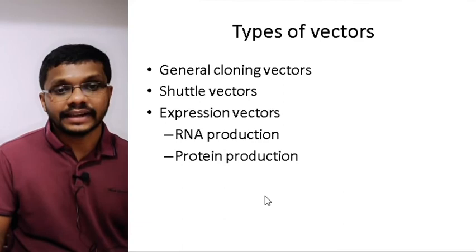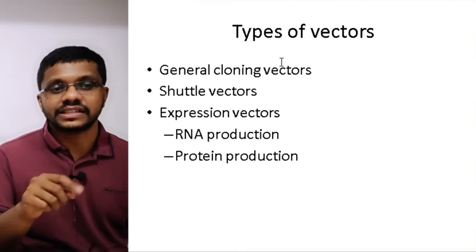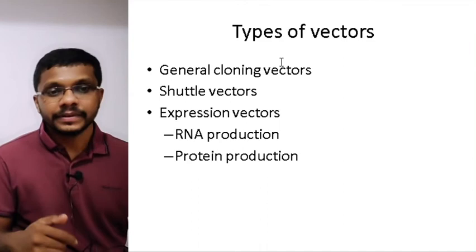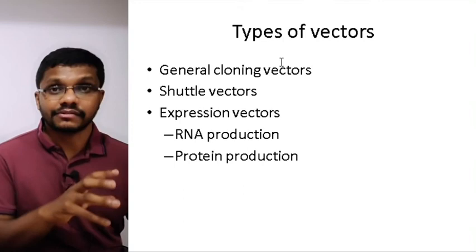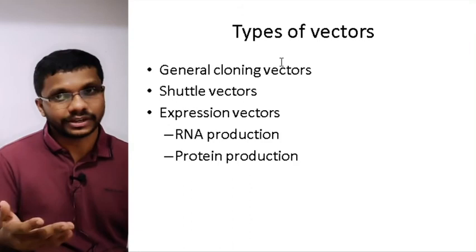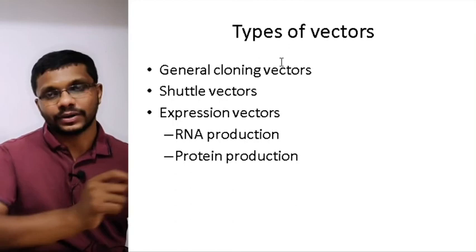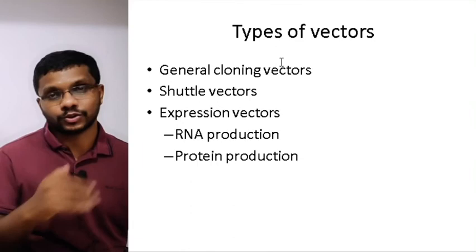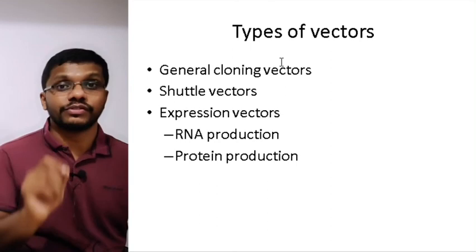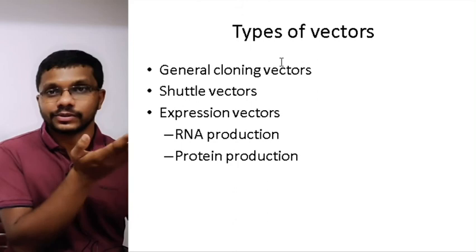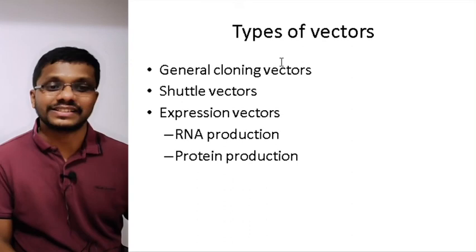There are different types of vectors. Some vectors are called general cloning vectors — all of the vectors discussed so far are general cloning vectors, used for cloning DNA and making multiple copies. Another type is called shuttle vectors. Shuttle vectors are vectors which can survive in two different hosts, meaning they have an origin of replication for two different organisms. For example, if a shuttle vector can survive in both E. coli and Saccharomyces cerevisiae, it has one origin of replication for each organism.